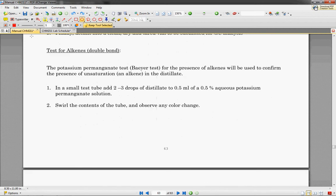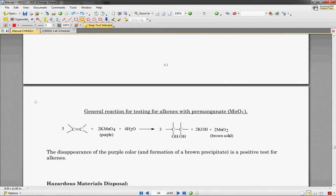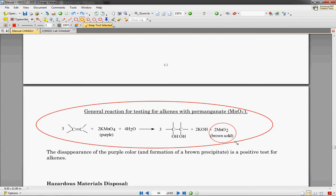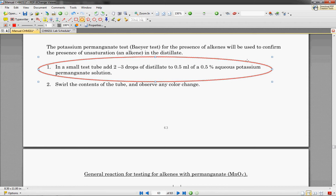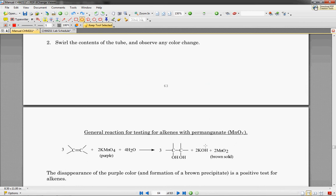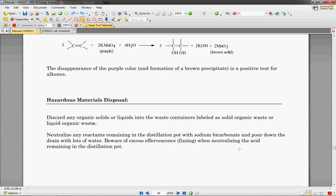Finally, we're going to do a little test for alkenes. Remember, that just means there's a double bond. There's a really nice picture of this test down here. Essentially, any sort of double bonds that you have are going to be turned into single bonds, and they're going to create magnesium oxide, which is going to be a brown solid. Here it says add a little bit of that distillate to 0.5 milliliters of 0.5% aqueous potassium permanganate solution and swirl, and see if you get any color change and any brown solid.